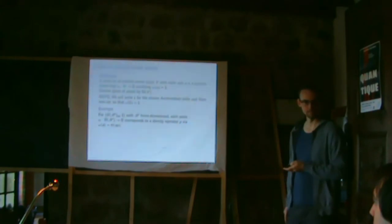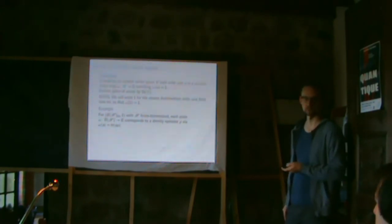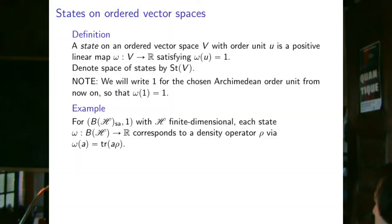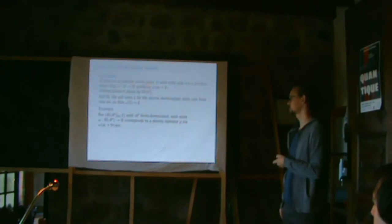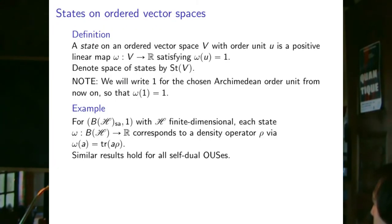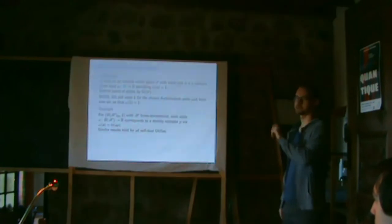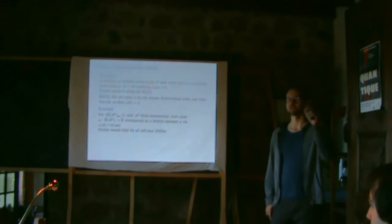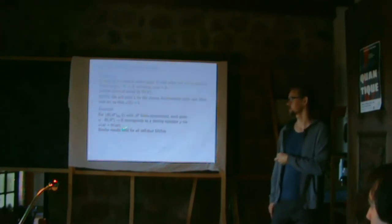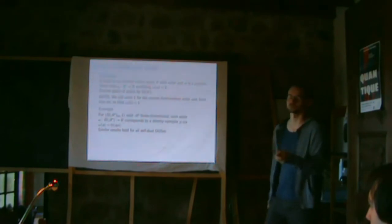Question: is this the same definition as for C*-algebras? Yes, it coincides — it's a positive linear unital map. For self-adjoint operators in finite dimensions, each such state corresponds to a density operator, recovering the expected definition. For self-dual order unit spaces, the trace-inner-product structure gives this: tr(A) = ⟨A, I⟩, and a similar property holds for all self-dual order unit spaces.